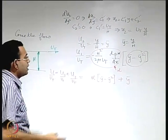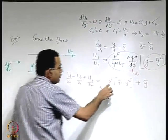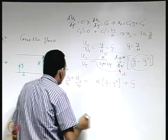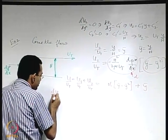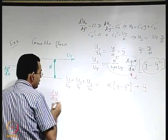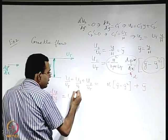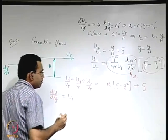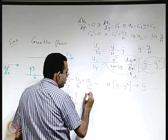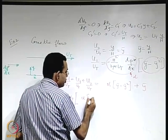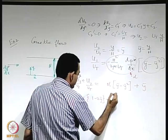Let us find du/dy for different values of alpha: du/dȳ = u_t * (alpha*(1 - 2ȳ) + 1). This gives an important picture of the velocity gradient distribution across the channel for varying alpha.